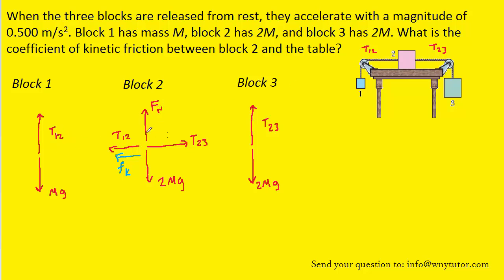Block two has several forces acting on it: the downward gravitational force, a normal force exerted by the table on block two. Block two is attached to both ropes, so we have a T12 and T23 force acting on it. And as block two gets dragged across the surface of the table, we have the kinetic frictional force.